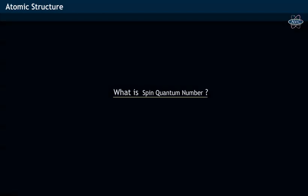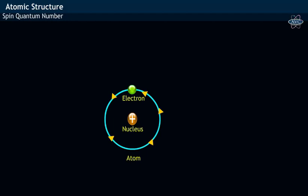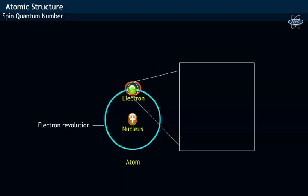What is spin quantum number? In an atom, electron revolves around the nucleus. During its revolution, electron spins on its own axis.